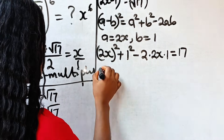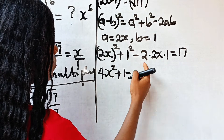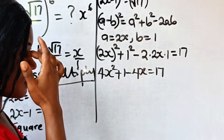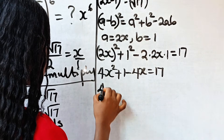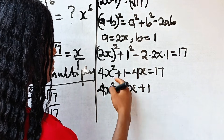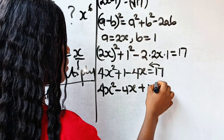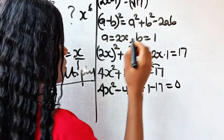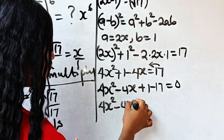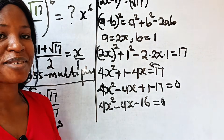So we have 4x² + 1 − 4x = 17. Rearranging, we get 4x² − 4x + 1 − 17 = 0, which gives us 4x² − 4x − 16 = 0.